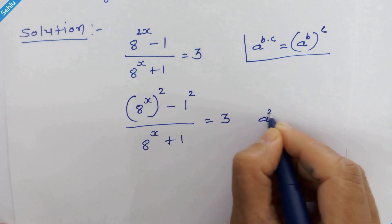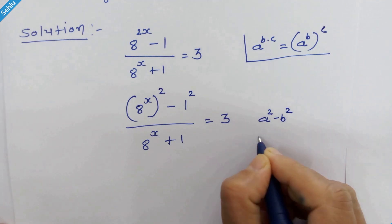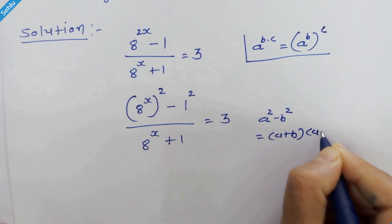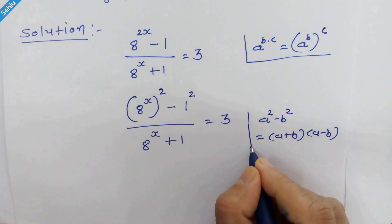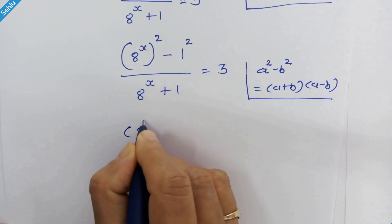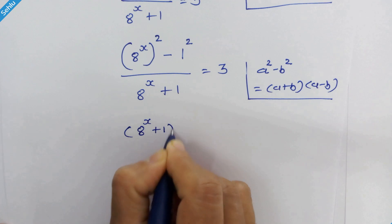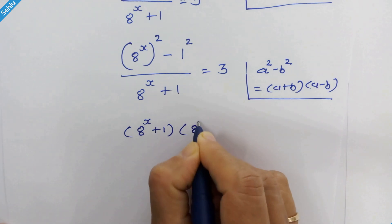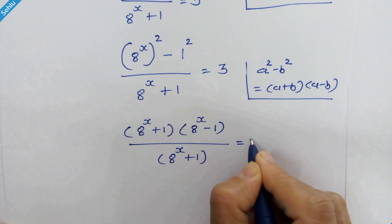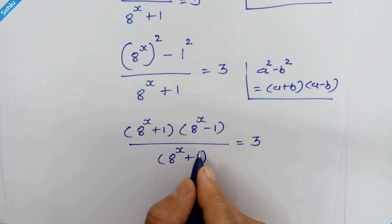Like a square minus b square is equal to a plus b times a minus b. So this can be written as 8 raised to x plus 1 times 8 raised to x minus 1 upon 8 raised to x plus 1 is equal to 3. These two brackets get cancelled out.